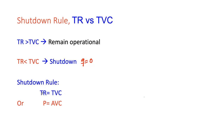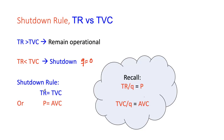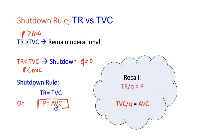This is essentially our shutdown rule. The shutdown rule is the equality between revenue and variable costs — this is the situation where the firm is indifferent between remaining operational or shutting down. We can translate this into price versus AVC by dividing both sides by quantity: total revenue divided by quantity is price, and total variable cost divided by quantity is AVC. So the shutdown rule is where price equals AVC. If price is higher than AVC, remain operational. If price is lower than AVC, shut down.